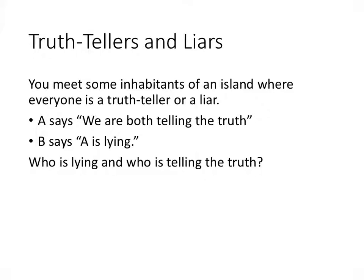We have two propositions, which we'll call P and Q, one for each inhabitant. If we had three inhabitants we might have P, Q, and R; four inhabitants P, Q, R, S, and so on. So P represents the statement 'A is a truth-teller,' and Q represents the statement 'B is a truth-teller.'